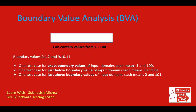If you follow boundary value analysis, your boundary values are 0, 1, 2 and 99, 100, 101. We write one test case for the exact boundary values — 1 and 100. We test just below the boundary: for 1 that is 0, for 100 that is 99. And one more set of test cases above the boundary: for 1 that is 2, and for 100 that is 101.